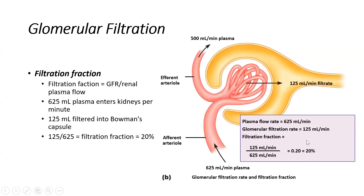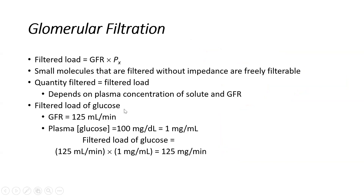This number also has a lot of clinical importance. It tells us how efficient the kidneys are at filtering out toxins and waste products from the blood. We like to see this number at 20, but as we get older and kidney function decreases, this number goes down — to about 18, then 16 — gradually dropping as the kidneys lose function as a natural part of the aging process. So the filtration fraction has significant clinical importance.